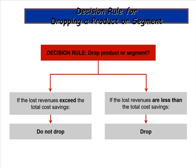The basic decision rule for dropping a product or segment: if the lost revenues exceed the total cost savings, don't drop it. If the lost revenues are less than the total cost savings, then go ahead and drop it.